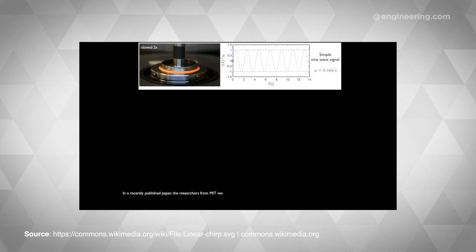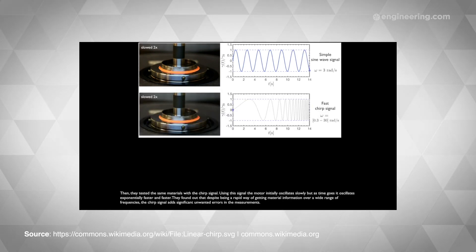Traditionally, rheometers press, twist, or stir soft materials at different frequencies and record their stiffness and elasticity each time. This approach is accurate, but it can take hours to fully characterize a single material.